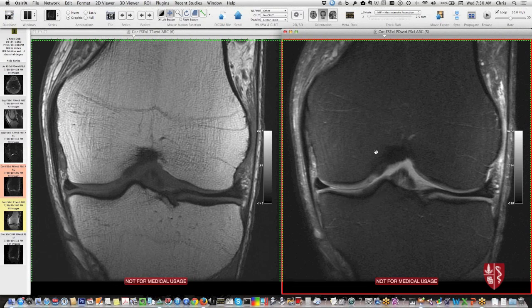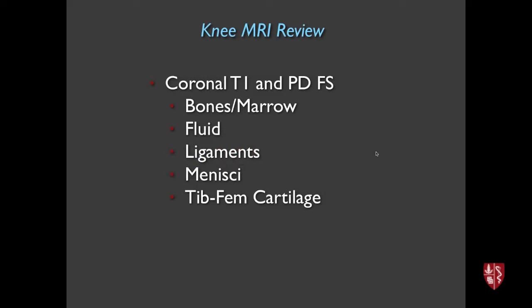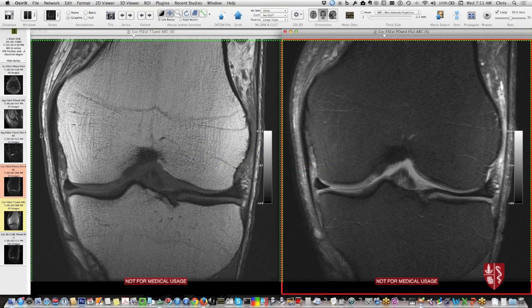Having gone through bones and marrow, ligaments, menisci, and tibiofemoral cartilage on coronals, I then move to sagittal images. The goal is to reinforce what was seen and look for other things not previously visible. On sagittals I go through the medial compartment looking at meniscus and cartilage again, sweep through the intercondylar notch for the cruciate ligaments, go to the lateral compartment, and then turn attention to the extensor mechanism and patellofemoral cartilage.